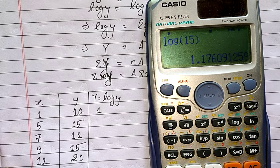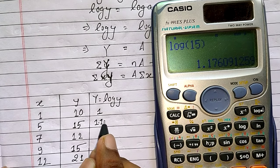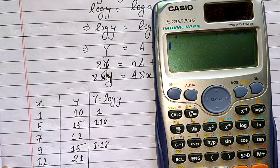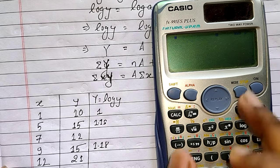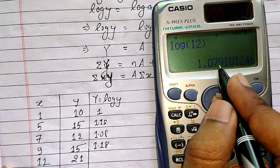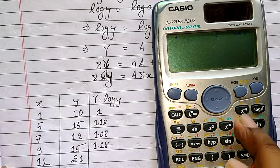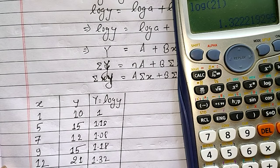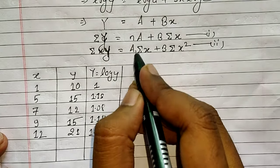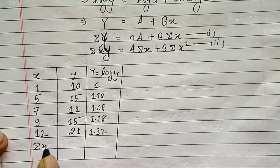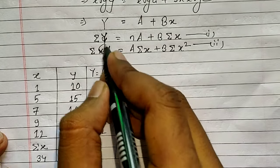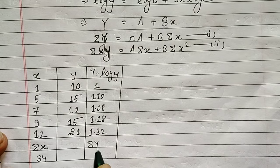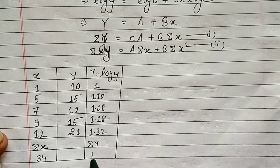Continuing the log Y column: log 15 ≈ 1.18, log 15 again ≈ 1.18, log 12 = 1.079 ≈ 1.08, and log 21 = 1.32. For summation x, adding all x values gives 34. Summation capital Y is the sum of all log y values: 1 + 1.18 + 1.18 + 1.08 + 1.32 = 5.76.